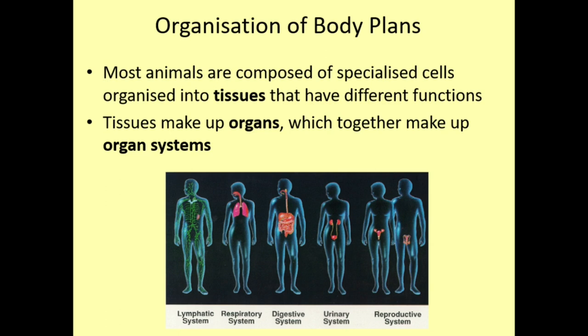Organs are made up of tissues, and tissues are made up of cells. Our organs also work with other organs to make organ systems. Examples include the lymphatic system, the respiratory system, the digestive, urinary, and reproductive systems. It's important to remember: cells come together to form tissues, tissues come together to form organs, and organs work together within organ systems.